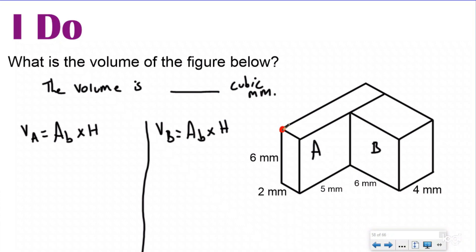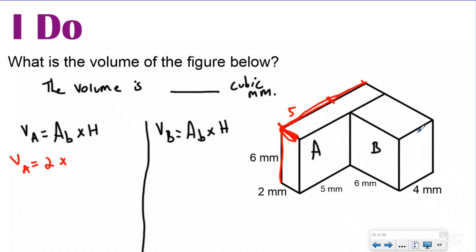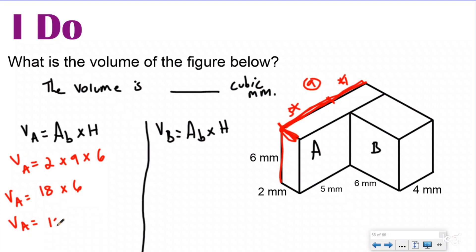For volume A, using this vertex as my 'peace sign,' I find my height, width, and length all from the same spot. My width is 2. For my length, I look opposite parallel and see 5, and another piece is 4, so I add those together for a length of 9. My height is 6. So I solve: 2 times 9 is 18, times 6 is 108 cubic millimeters.